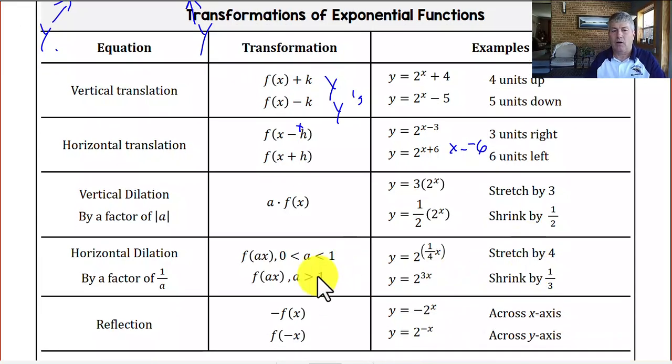And our reflections, the negative is outside the x's, so that's going to reflect across the x-axis, meaning it's going to change our y's. And when we change our y's, we'll reflect across the x-axis. Whereas negative x, we're going to reflect across the y-axis. A positive x becomes a negative x, so that's going to be a reflection across the y-axis.